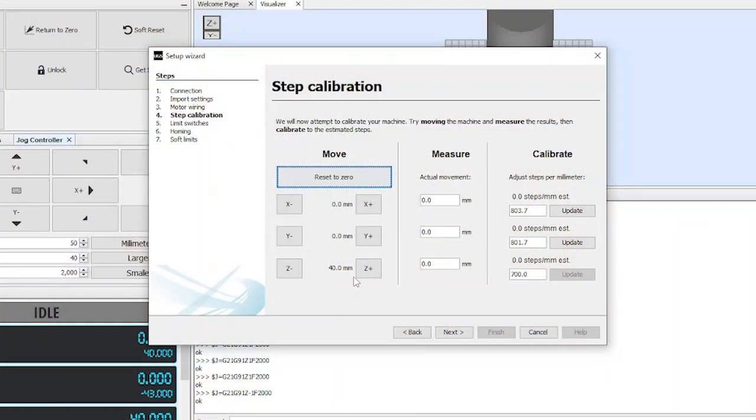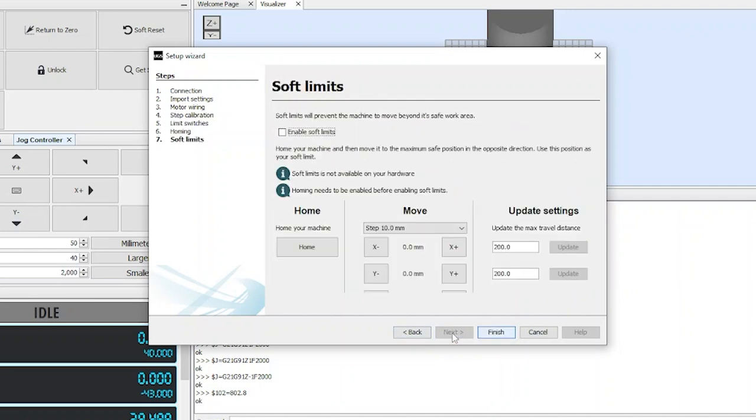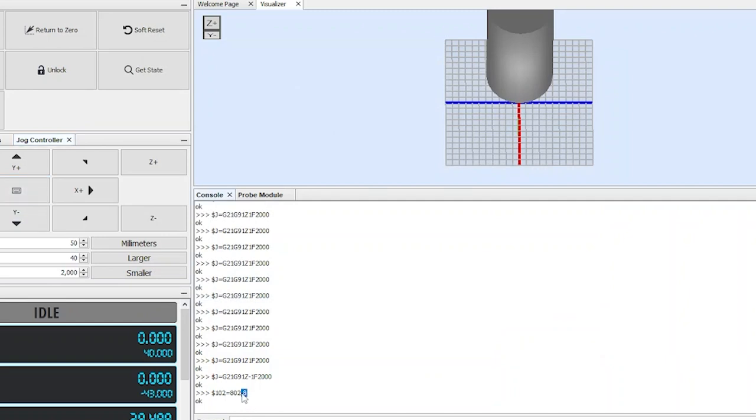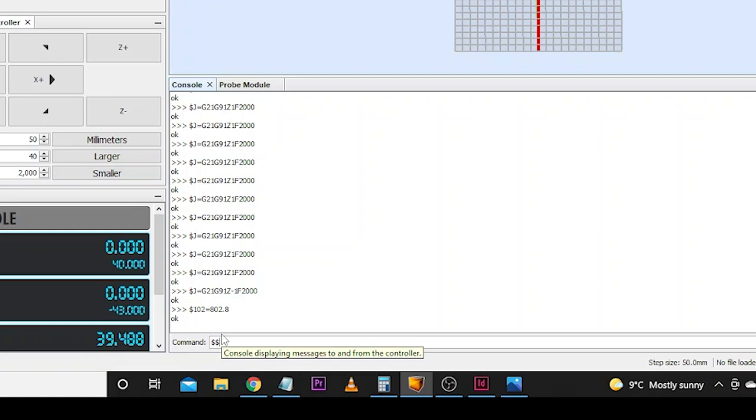Let's do this one using the wizard. The movement we set it to go was 40 millimeters. The actual movement it did was 34.88 millimeters. That is showing a new step setting at 802.8. We'll type 802.8 in the box and the update button has come to life. We'll click update. That has recalibrated that step. We can now close this down. We can see 802.8. We've now got new settings for our $100, $101, $102.